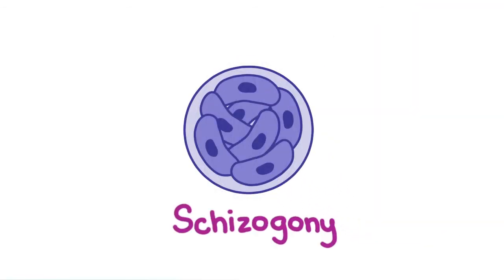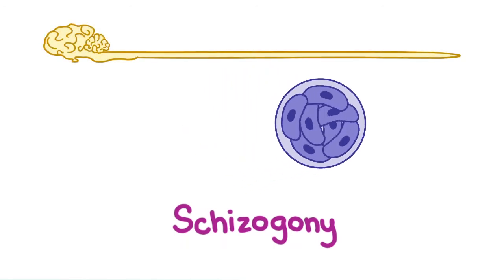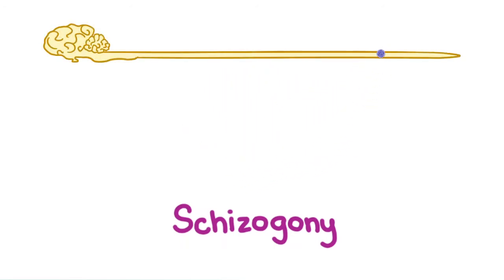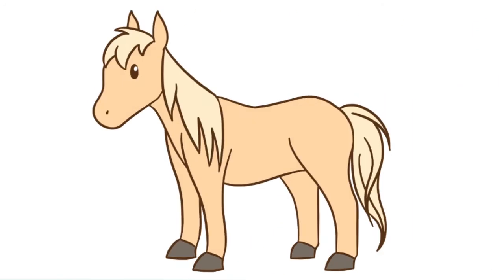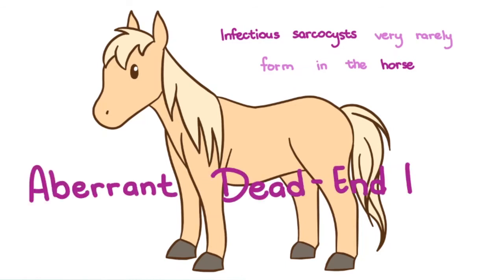Sarcosystis neurona undergoes schizogony, at first in tissues outside the central nervous system, but later encroaches into the spinal cord and brain. Infectious sarcocysts very rarely form in the horse. Thus, the horse is considered an aberrant dead-end host.